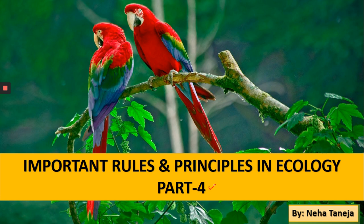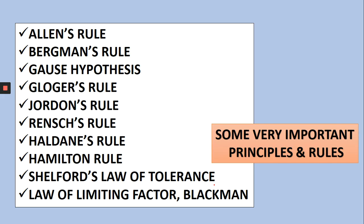Make sure that if you proceed part by part, it will be much better. You will be able to link things in a better way. So if I talk about what has been covered — Allen's rule, Bergmann's rule, Gause's competitive exclusion principle, and Gloger's rule — these 4 things have been discussed with proper examples. Now we will focus on the remaining rules, so let's start.